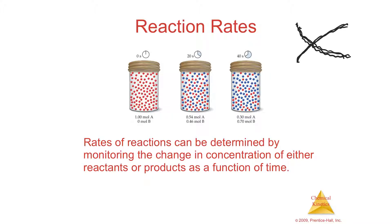The rate — remember — is your speed; that's what you're looking at in kinetics. In this example, at zero seconds you've got all A and no B. At 20 seconds, it's about half-half — you've still got a little bit of A and a little bit of B. And at 40 seconds, you've got less A and more B.